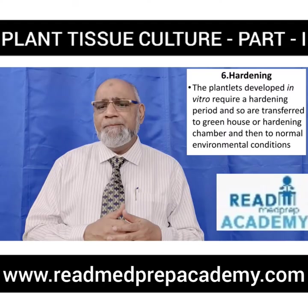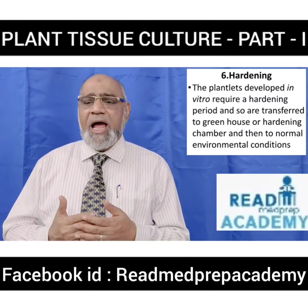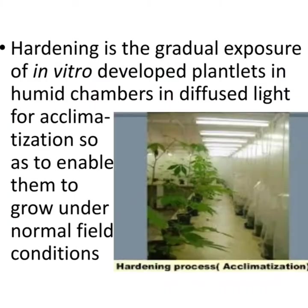Hardening: plantlets developed in vitro require a hardening period and are transferred to a greenhouse or hardening chamber, then to normal environmental conditions. Hardening is the gradual exposure of in vitro developed plantlets in humid chambers in diffused light for acclimatization, enabling them to grow under normal field conditions. In the image you can see how acclimatization is done in the humid chambers.